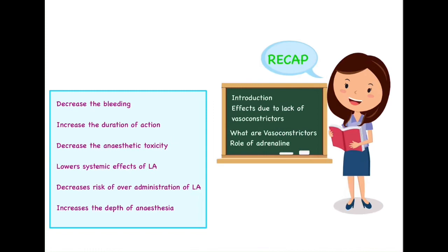A quick recap of what we have learned: in the introduction, we discussed why there is a need to add vasoconstrictor — because all local anesthetics are inherently vasodilators that predominantly dilate capillaries and arterioles. Because of this, there is increased perfusion at that site and the local anesthetic agent gets redistributed towards other systems. There is also a risk of over-administration of the drug, and because of inherent vasodilation, there will be increased blood flow at that site, leading to excess bleeding during procedures.